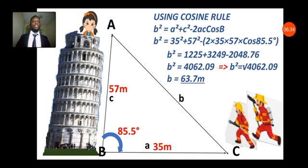If I compute that properly again, I should have b² equal to 4,062.09. Now the square root of 4,062.09 should give us approximately 63.73 meters. That is the distance between the firefighters and the girl at the top of the building.